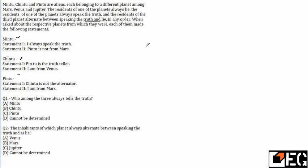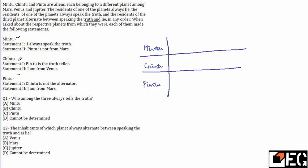There are three persons: Mintu, Chintu and Pintu. Check the statement given by Chintu — he said 'Pintu is the truth-teller.' If a person is a truth-teller and is saying another person is also a truth-teller, that would mean there are two truth-tellers, which is not possible. It was mentioned that only one planet always lies, one always speaks truth, and one alternates. So Chintu cannot be a truth-teller.